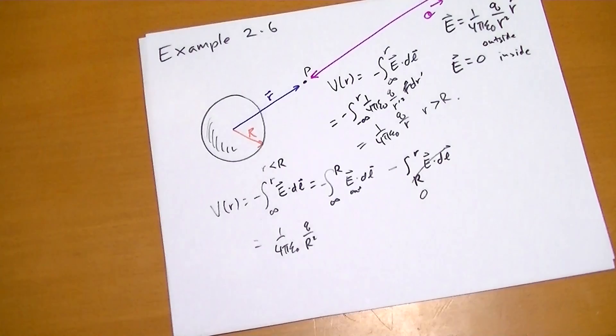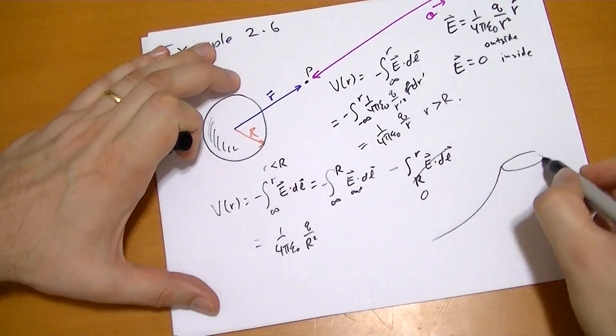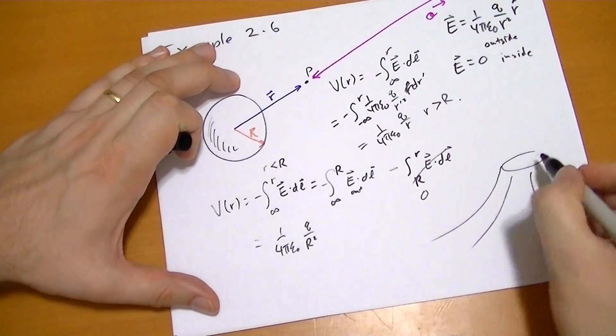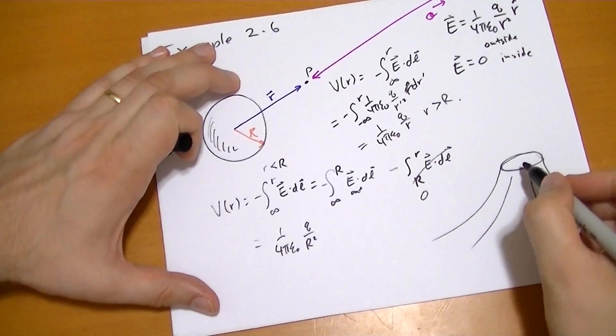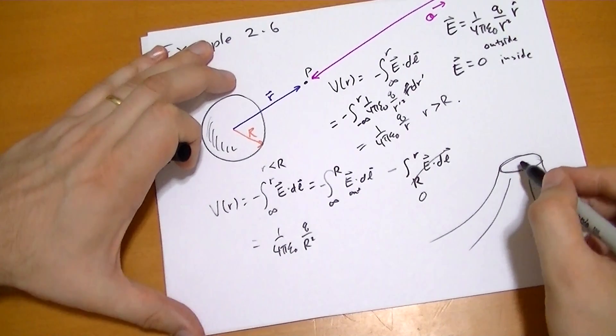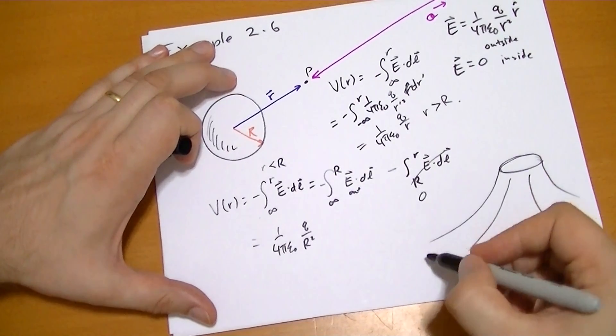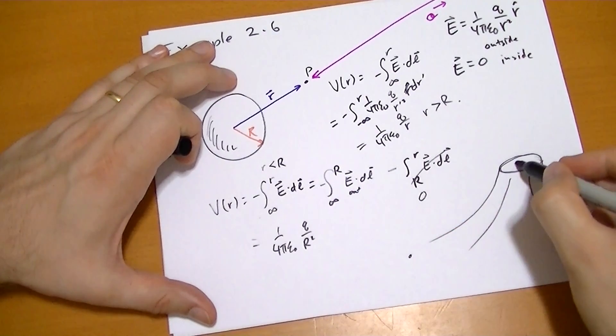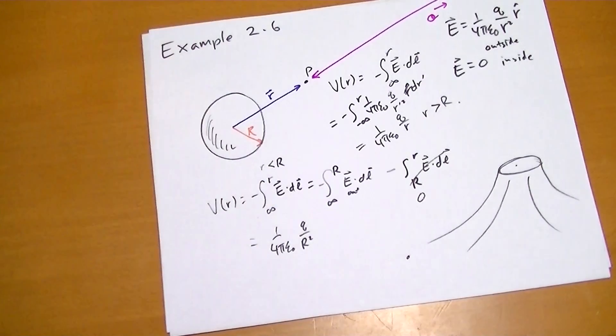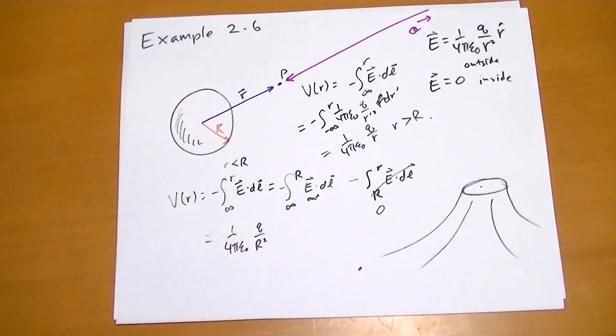And that's actually really easy to explain is because if you imagine you had some mountain like this, even though at the top it's flat of this mountain, there's no gradient, which is what the electric field is, the gradient of the potential. Even though there's no gradient at that point, there still is quite a bit of difference from down here and up here in terms of potential. So that shouldn't surprise you.